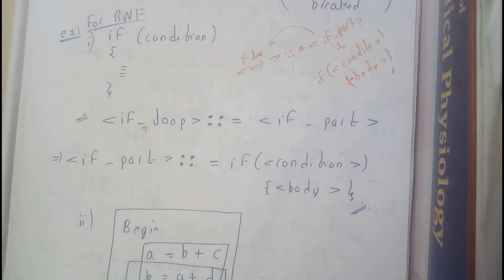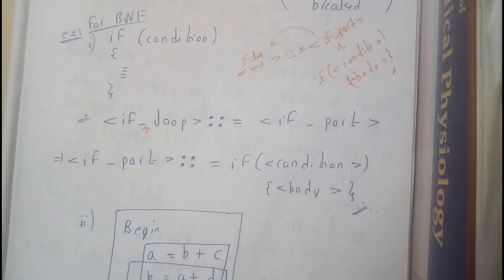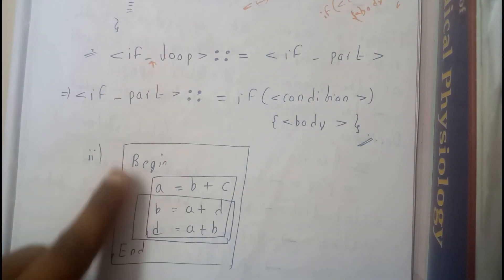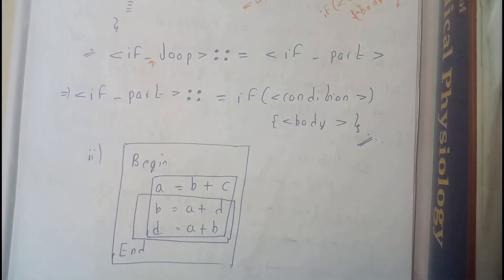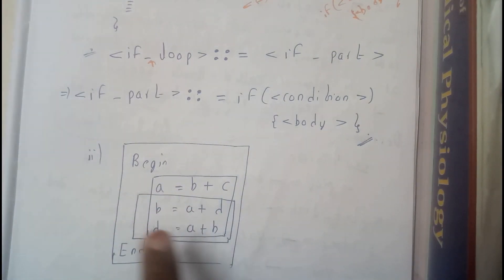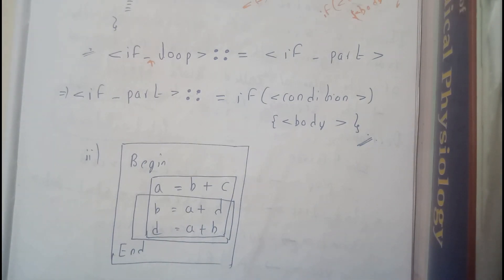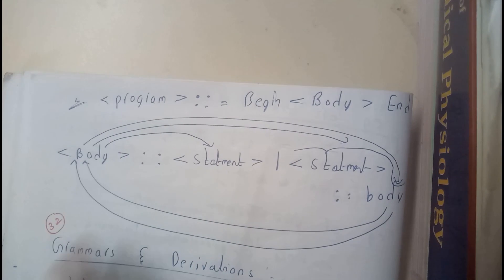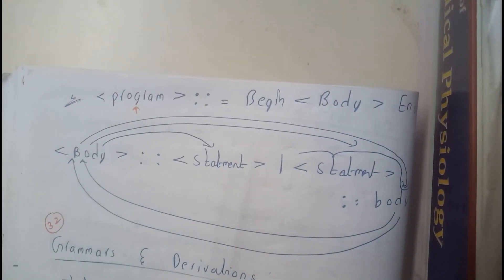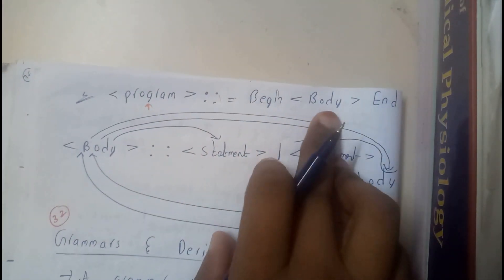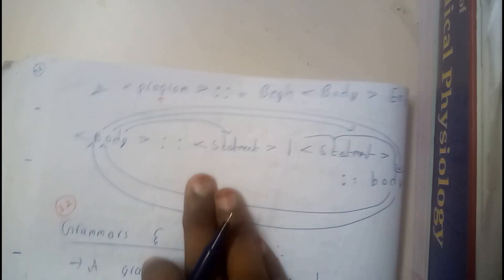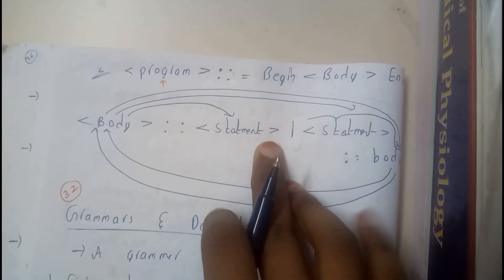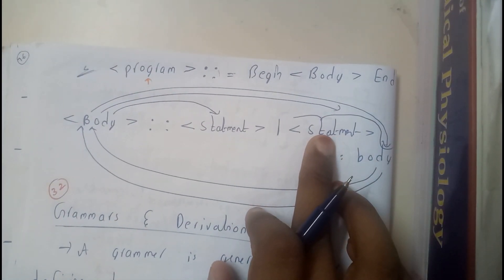Now let us go through another language where we have begin and end with three statements. We need to form the BNF for these three statements: a = b + c, b = a + d, and d = a + b. First, we assume the program structure. Program ::= begin body end. Here body consists of statement one followed by a series of statements, and then body ends.